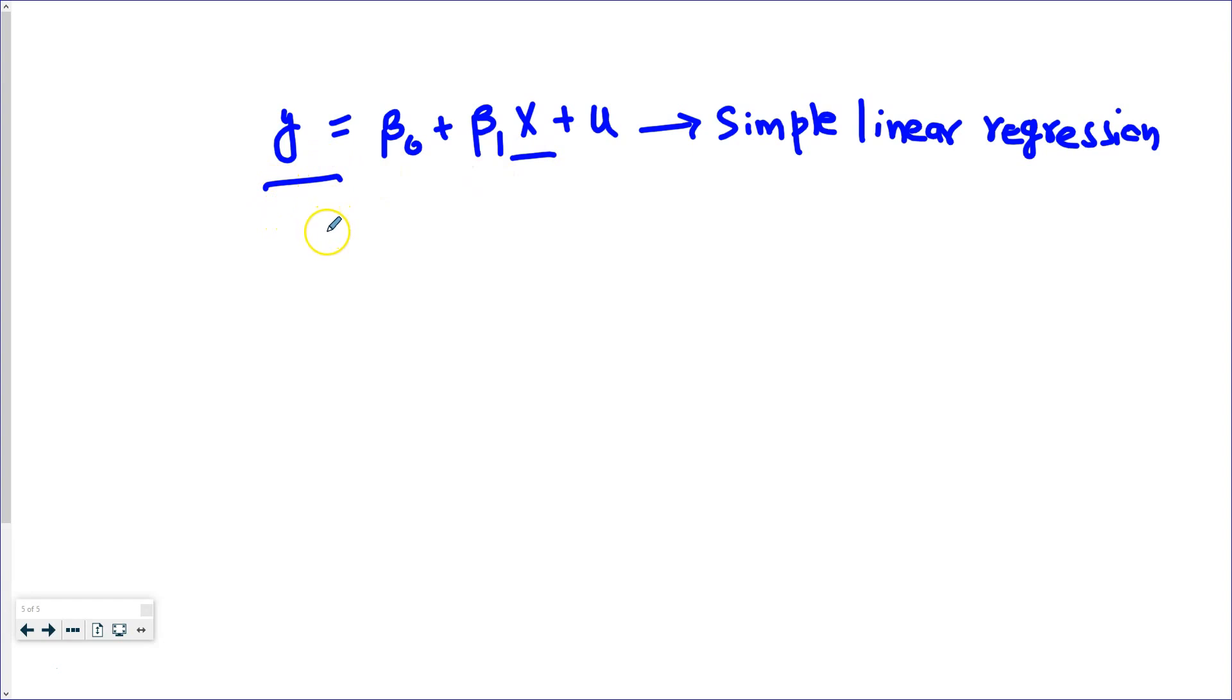But in this case, it was very difficult to make the ceteris paribus assumption. For example, there may be other variables that may be explaining this y variable. And we saw in some cases that if x variable alone tries to explain variation in y variable, the R-squared value was very low.